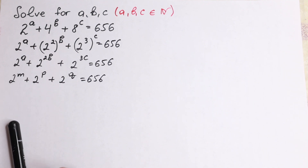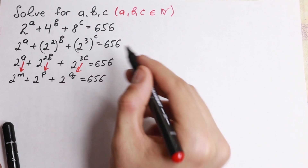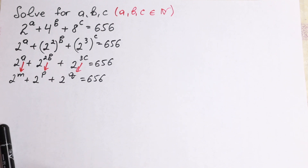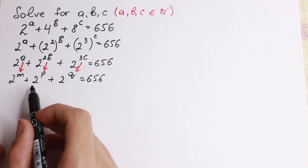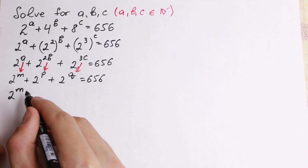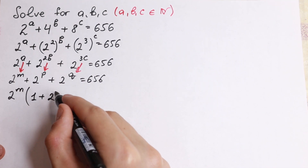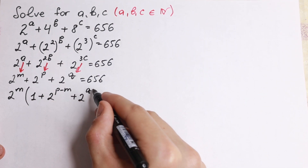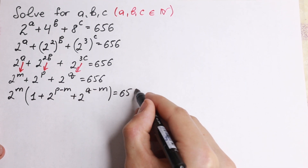So I use this substitution, where a equals m, 2b equals p, and 3c equals q. Now I suggest factoring out 2 to the power m. If we factor out 2^m, we get 2^m times the quantity 1 plus 2 to the power p minus m, plus 2 to the power q minus m, equal to 656.